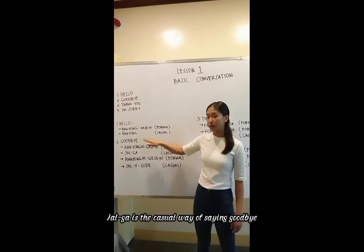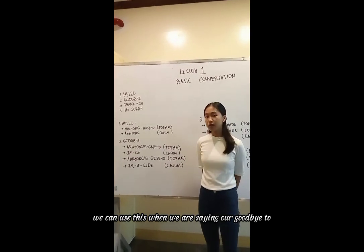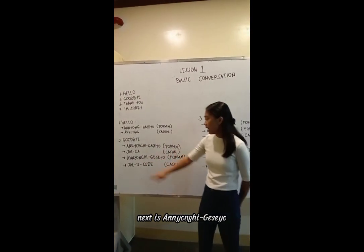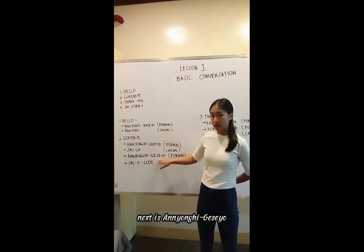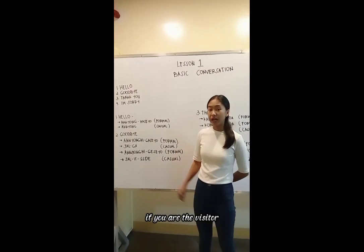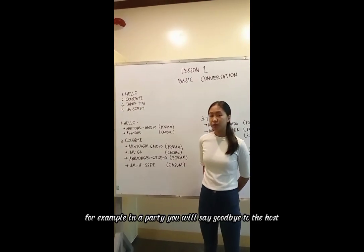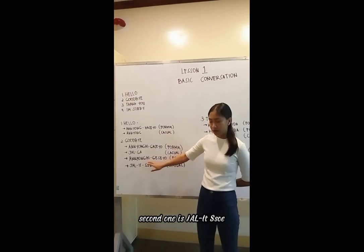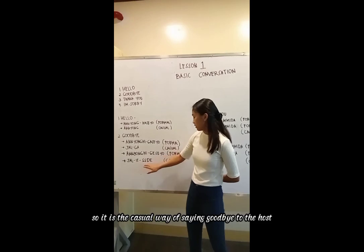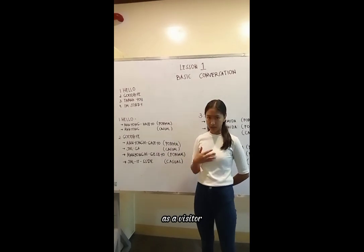The casual way of saying goodbye is jalga. We use jalga when saying goodbye to friends or people close to us. If you are the visitor — for example at a party saying goodbye to the host — the formal way is annyeonghaseyo, and the casual way is jal itso.